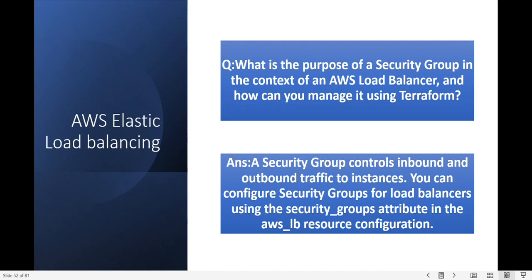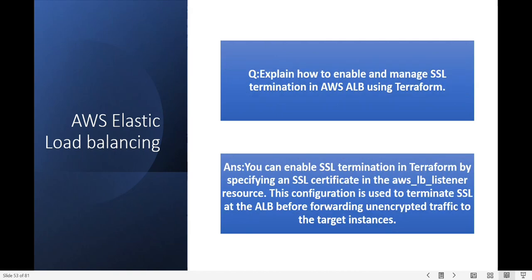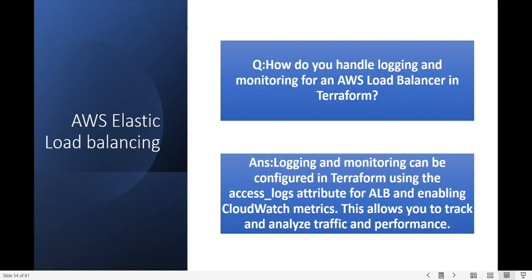Next question: explain how to enable and manage SSL termination on an AWS ALB using Terraform. You can enable SSL termination in Terraform by specifying the SSL certificate in the aws_lb_listener resource. This configuration terminates SSL at the ALB before forwarding decrypted traffic to the target instances.